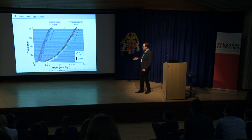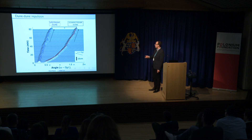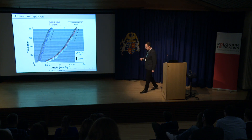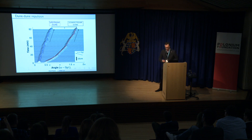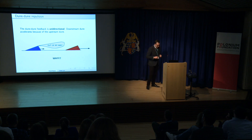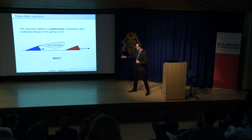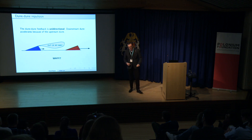Another thing you can get from this diagram is that the blue dune maintains constant speed — it just keeps going, you can tell by the fact that the blue line is straight. It is the red one which is significantly faster at the beginning, and then its migration rate converges to the migration rate of its neighbor. So the dune-dune feedback we've got here is fundamentally directional — it is the blue dune which politely asks the red dune to move on, though in fact the blue dune almost literally pushes the red one.